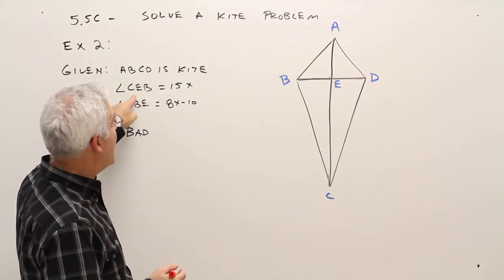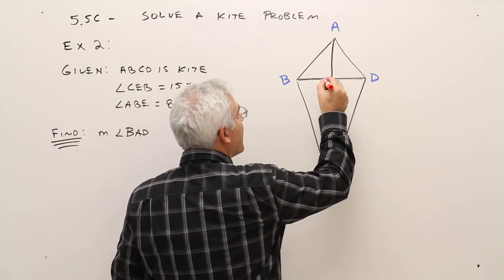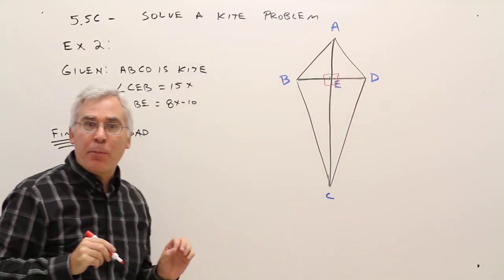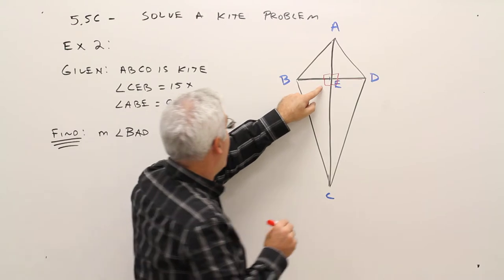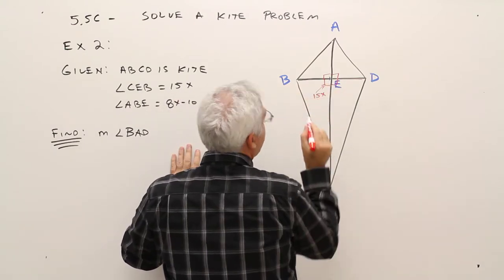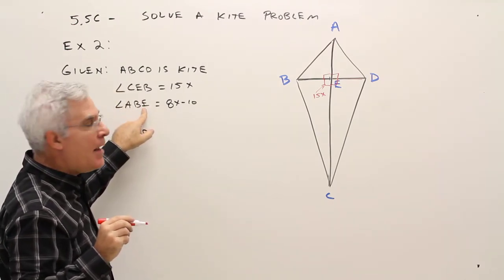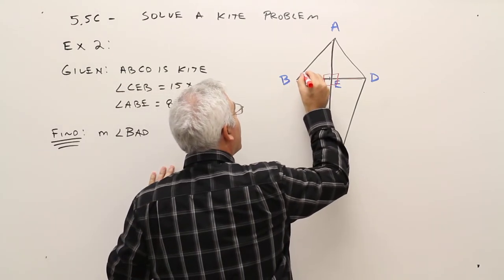The measure of angle CEB is 15x. One thing to note is that the diagonals are perpendicular. So it's telling me that this angle right here is 15x. The measure of angle ABE is 8x minus 10. So that's this angle right here.